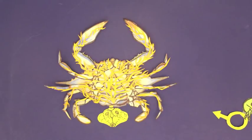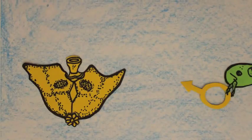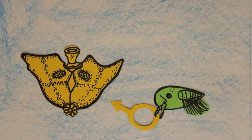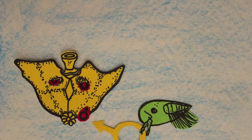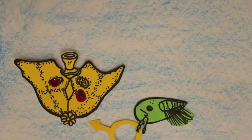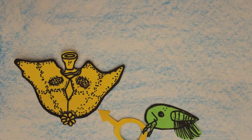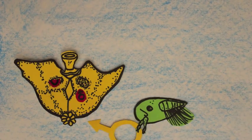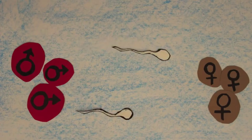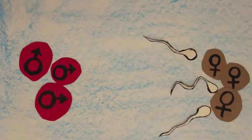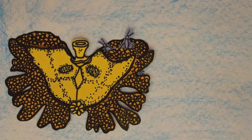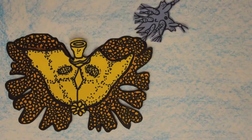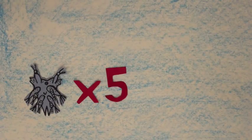When a male juvenile encounters a virgin externa, he injects male cells into it. These male cells migrate into the externa and produce sperm, fertilizing the eggs of the female parasite and giving rise to a new generation of rhizocephaline larvae.